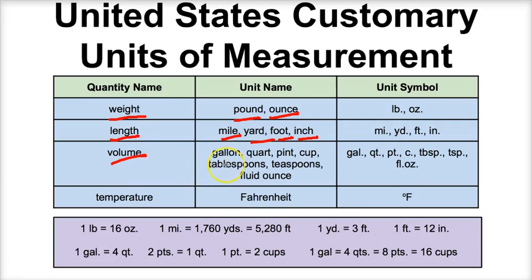For volume in the US we use gallons, quarts, cups, pints, tablespoons, teaspoons, and fluid ounces. Leave this country and they're mostly using liters and milliliters. For temperature, we use the Fahrenheit scale — today in August it's probably about 90 degrees Fahrenheit outside. Tell someone in Japan it's 90 degrees and they'll think fire and brimstone are raining down, because they're on the Celsius scale, and at 90 degrees Celsius life does not exist.